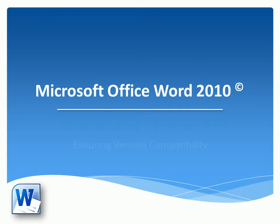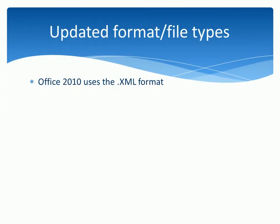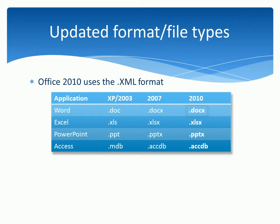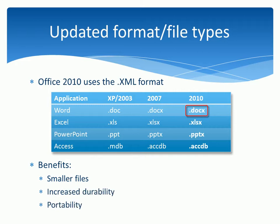In this clip, we'll take a look at compatibility issues between Microsoft Office Word 2010 and earlier versions of the program. In Office 2010, we're introduced to OpenXML, which, like 2007 files, adds an X to the file extension of Word documents. The new files are compact, up to 75% smaller in some cases. They're less likely to crash or freeze up, and are easier to integrate with other systems.